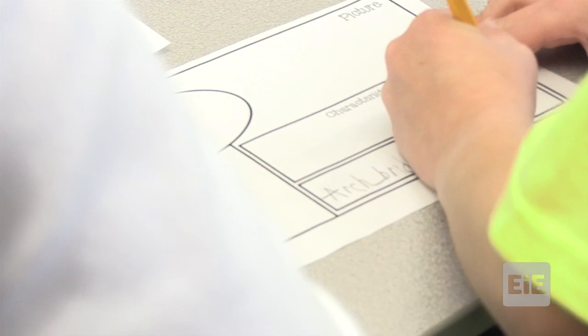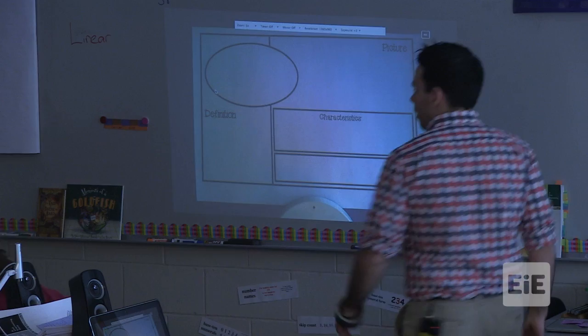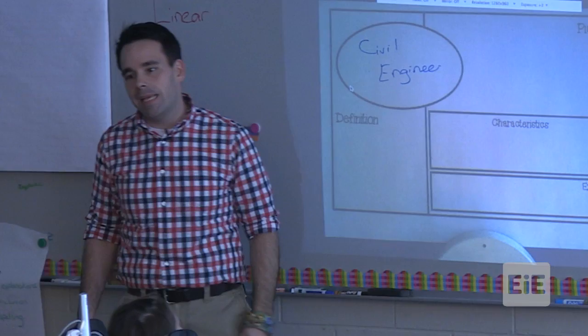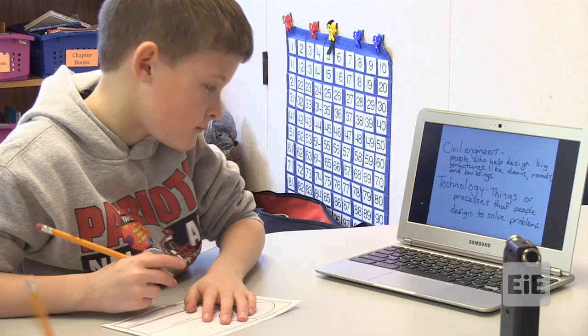So let me show you the Frayer model that we are going to use. The Frayer model at our stations will look like this. What I am going to ask you to do is write the word up here. So for example, one of the words is civil engineer. And then I want you to give me an example. You are going to watch what I call a Show Me. The Show Me is me teaching you about these words.